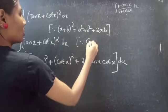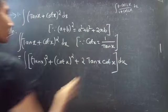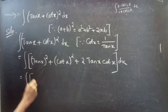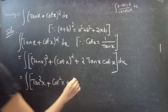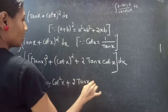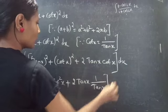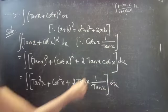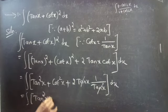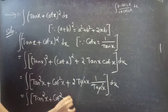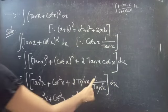Since cot x equals 1 over tan x, we replace cot x by 1/tan x. So we get tan²x + cot²x + 2·tan x·(1/tan x) dx. Now we can cancel tan x, so this equals the integral of tan²x + cot²x + 2 dx, since 2 times 1 is 2.